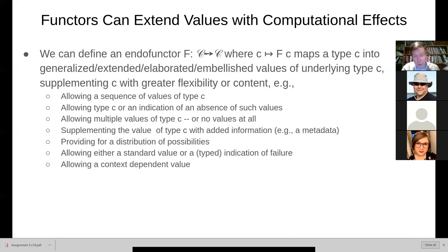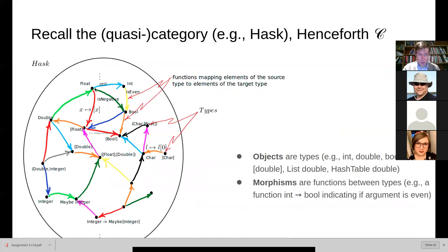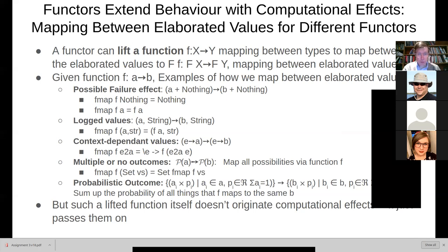Instead of just dealing with a simple int, we can deal with a maybe int, or a set of possible ints, or a list of possible ints — maybe indicating multiple return values or no return values at all if it's an empty list. We could take that int and map it with the functor to an int and a string, where the string could indicate if we had some problem computing that int, or it might log what happened when we computed it. So with functors, we can take types and map them to these embellished, generalized values that can capture computational effects.